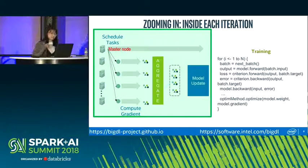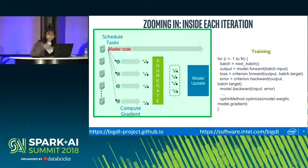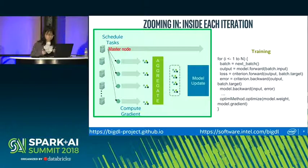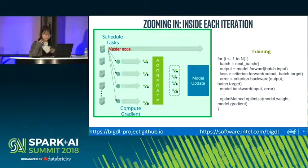In the procedure: assuming you need to iterate N times, at the beginning of each iteration you first get a batch of data, then use backpropagation to compute the gradients, then do the aggregation, and finally use a predefined optimization method to update the weights.